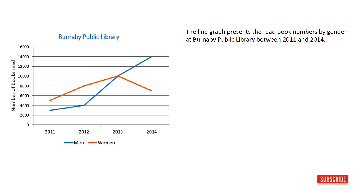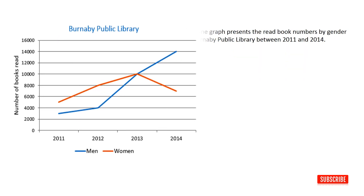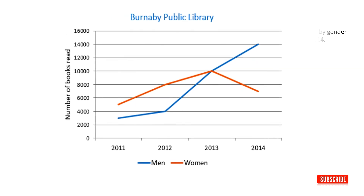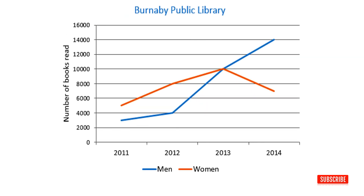So, what should you write in your overview? You can start your sentence with the word 'overall' and write down a general trend of the graph. Now, try to find what the general trend is for the number of books read by women over the given time period. Is it an upward or downward trend? Find it.